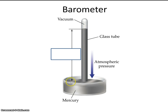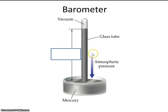And in this dish down here, there's some liquid mercury. We've learned that atmospheric pressure pushes in all directions. One of the directions it pushes is down, so the atmosphere pushes down on this liquid mercury. As it does that, it forces the mercury to rise up in this column. And depending on your altitude, the mercury will rise to different heights.